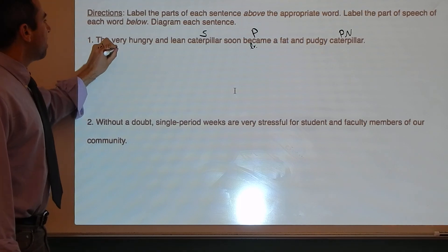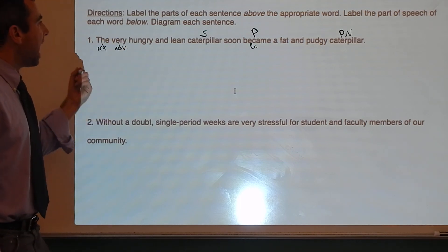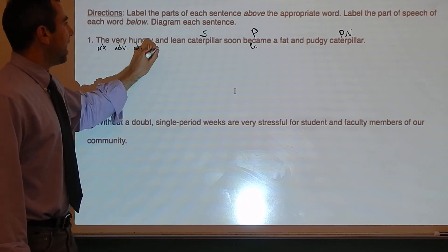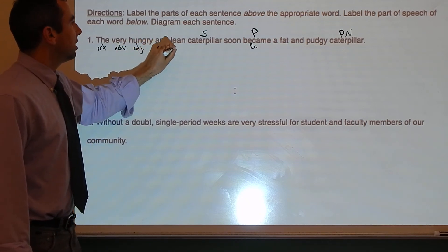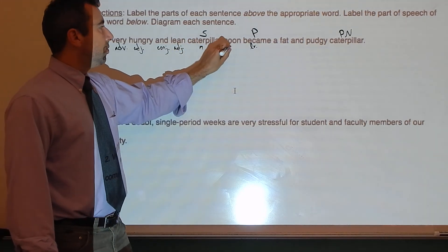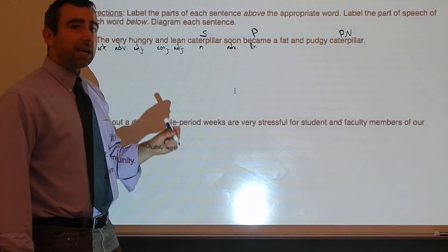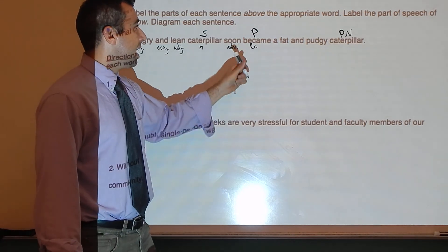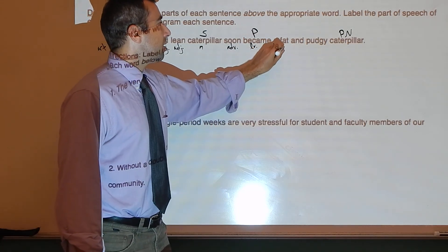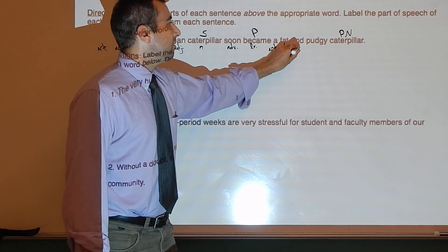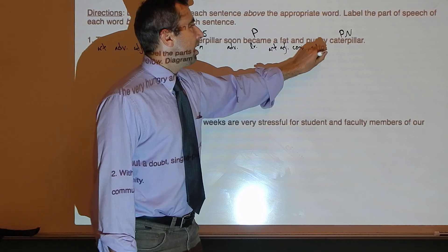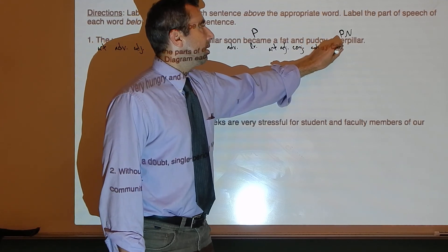The is an article. Very is an adverb — it tells us how hungry the caterpillar was. Hungry is an adjective. And is a conjunction. Lean is an adjective. Caterpillar is a noun. Soon is an adverb telling us when the predicate happens. Became is a linking verb. A is an article. Fat is an adjective. And is a conjunction. Pudgy is an adjective. Caterpillar is a noun.